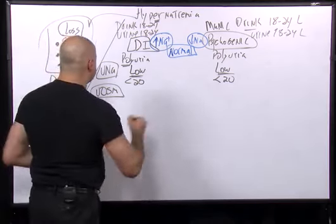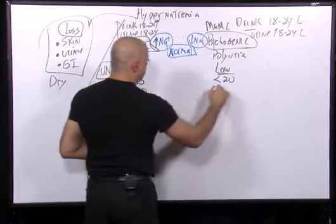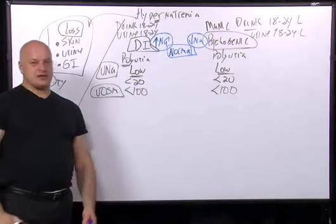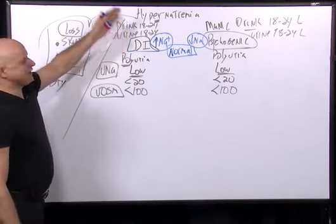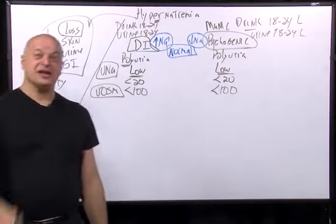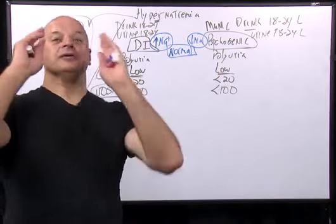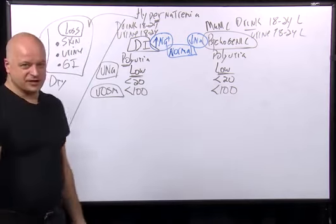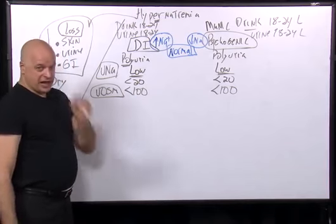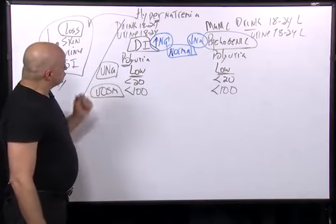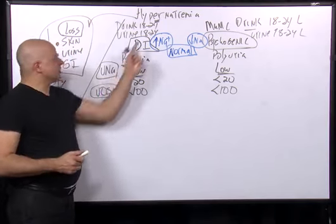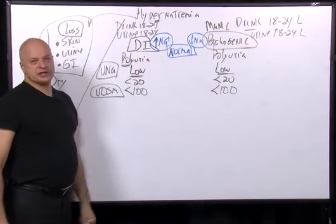So which of these has a low urine osmolality? Low urine osmolality means under 100, under 50. The answer is both of them. If you can find someone urinating 18 to 24 liters a day at a high urine osmolality, that would be a miracle. They both have polyuria and polydipsia.